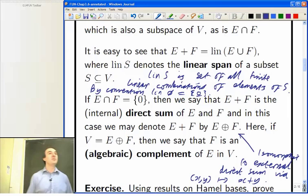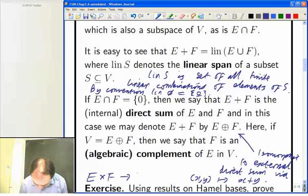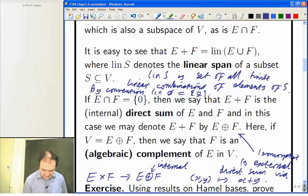via the map XY goes to X plus Y. It's rather difficult for me to tell you where the map goes from and to, since they both have the same notation but mean different things. I guess I could write it as a map from E cross F goes to V, or E plus F. But this time internal. So this one is the external.